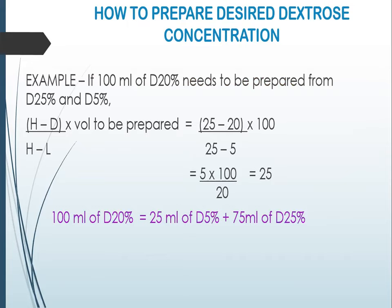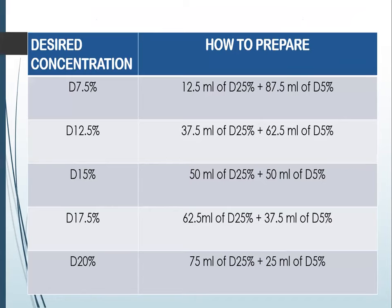So, the highest concentration is 25% and the desired concentration is 20%, divided by 25% minus 5% (the lowest), multiplied by 100 ml. This gives (5/20) × 100, which equals 25. So we take 25 ml of dextrose 5% plus 75 ml of dextrose 25%. A chart shows other commonly desired concentrations: dextrose 7.5% can be prepared by adding 12.5 ml of dextrose 25% and 87.5 ml of dextrose 5%. Similarly for dextrose 12.5%, 15%, 17.5%, and 20%.